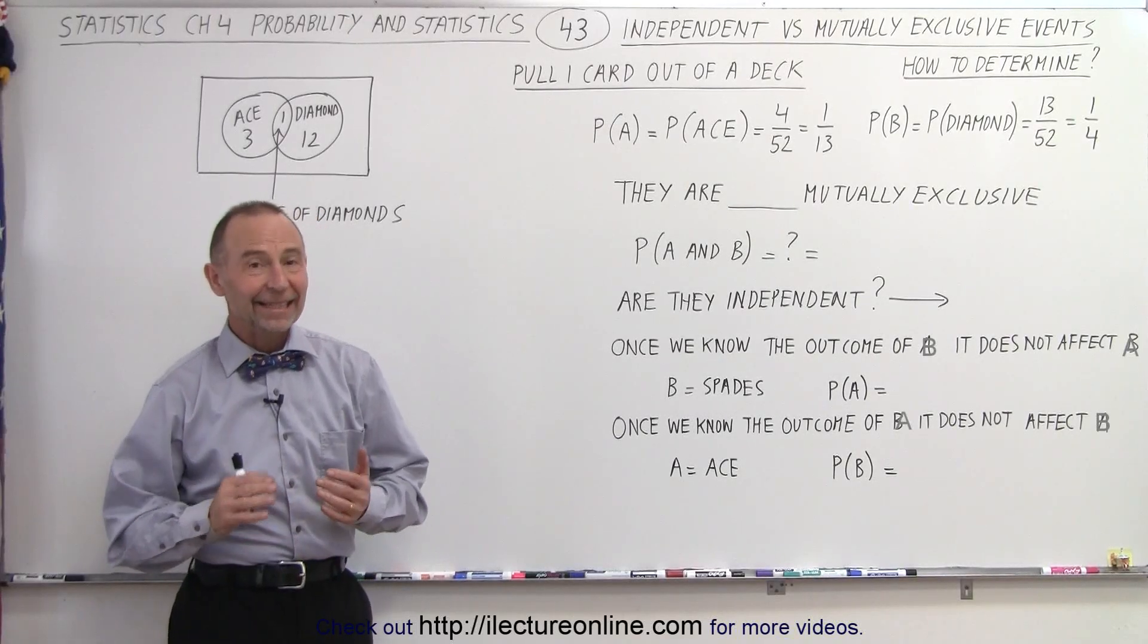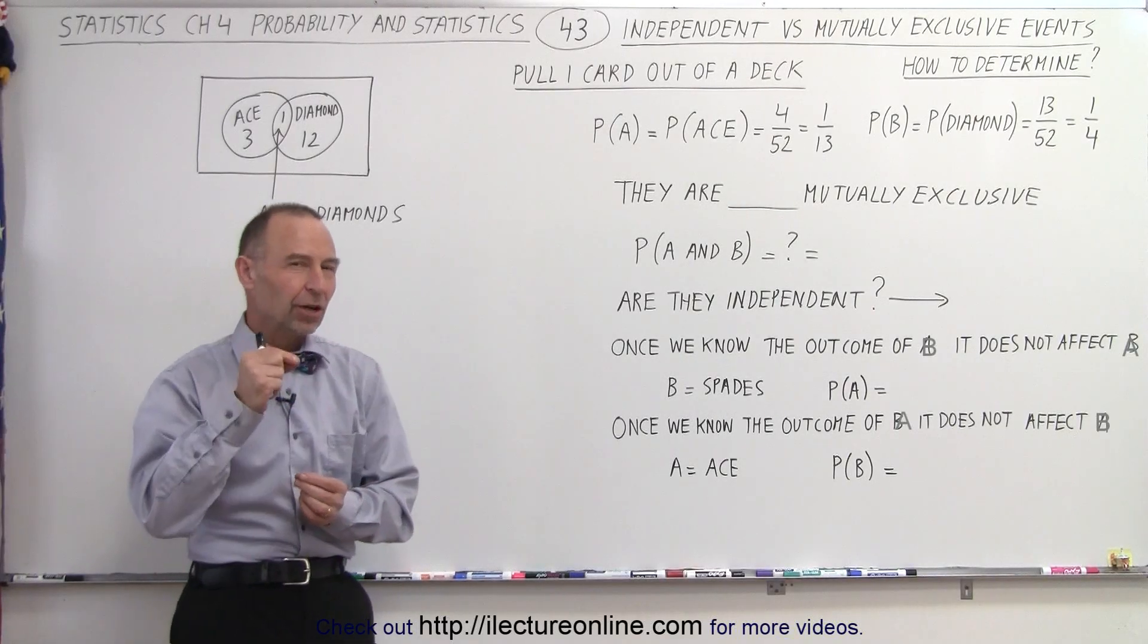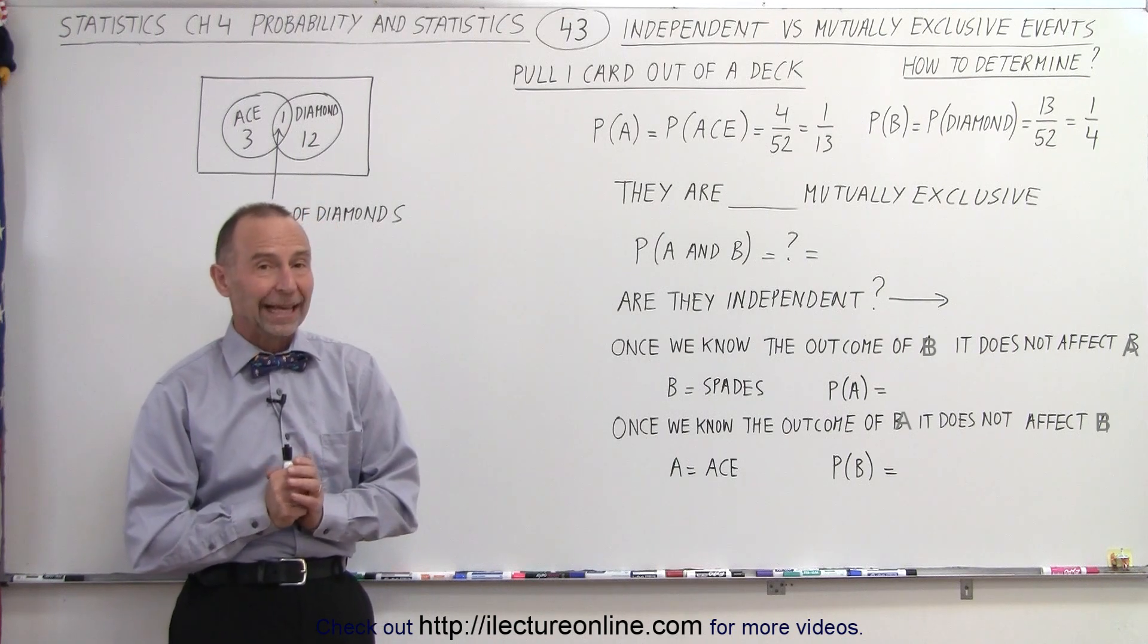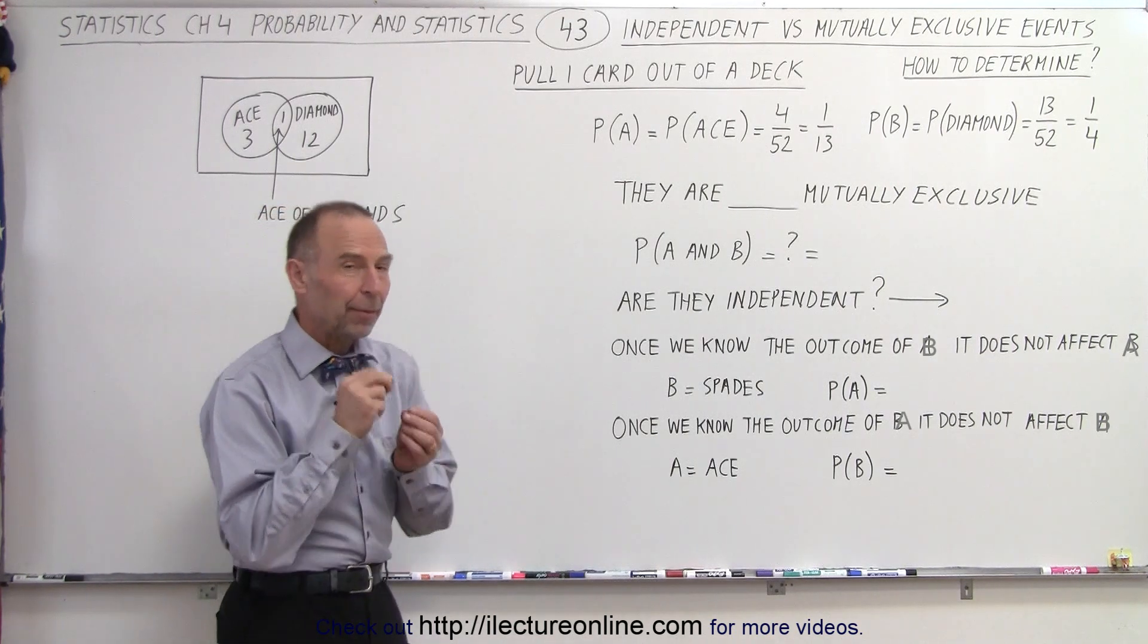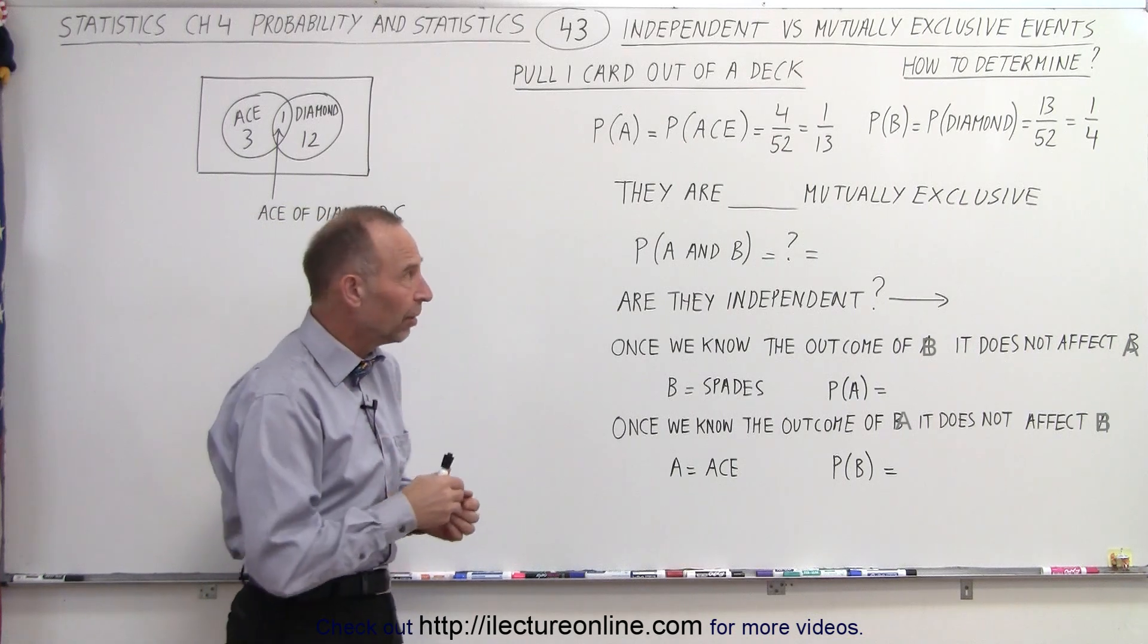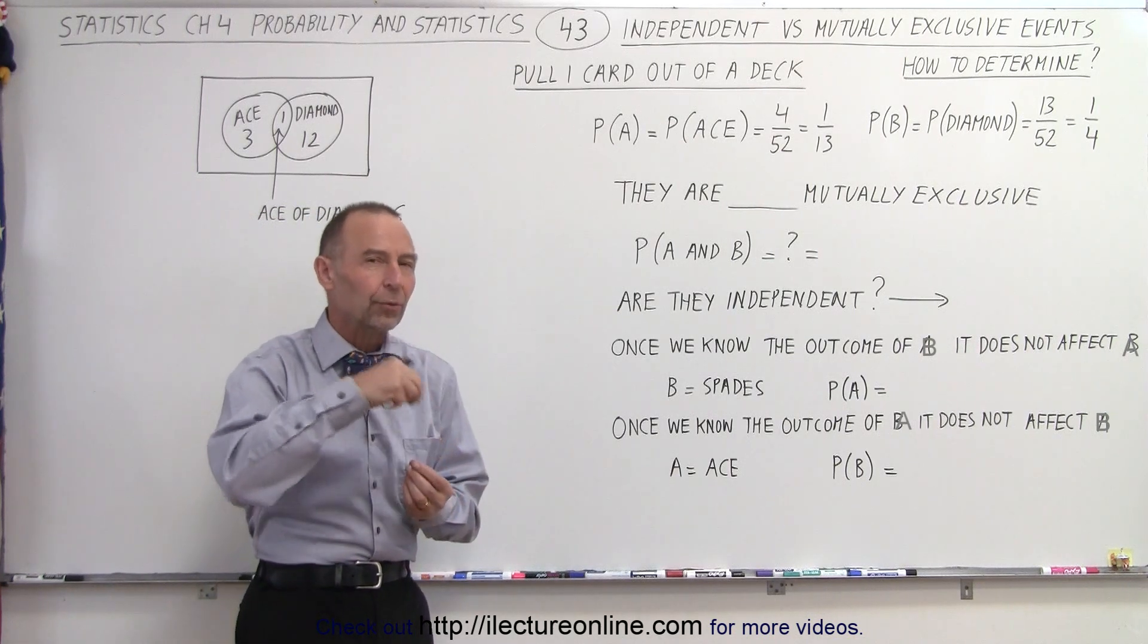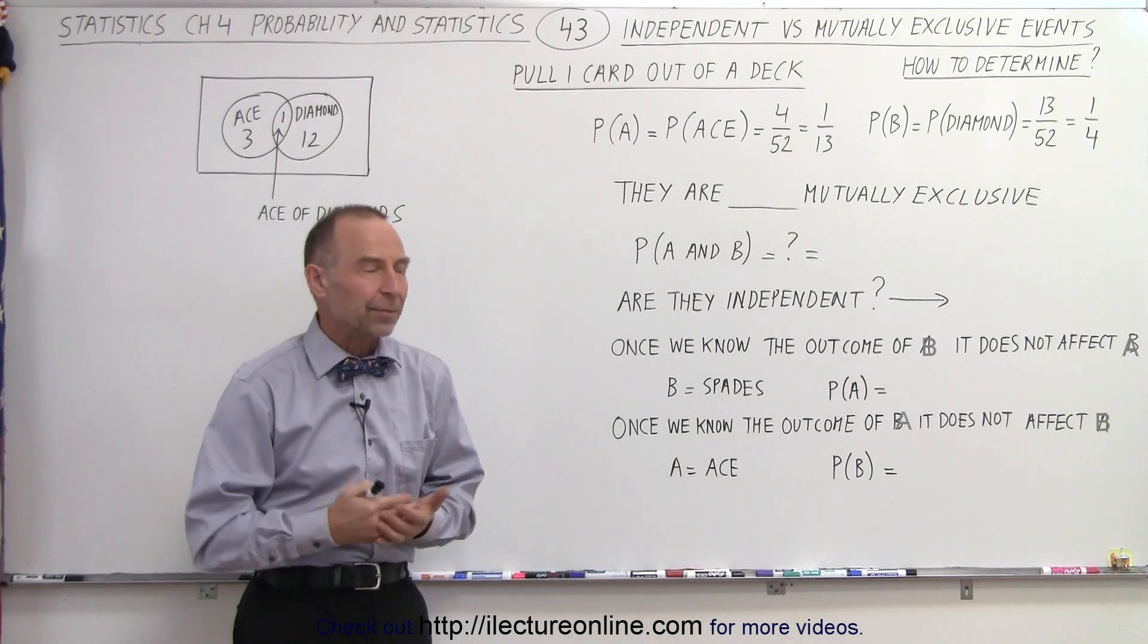Welcome to our lecture online. In this example, we're pulling a single card out of a deck of cards and we have two probabilities. Probability A is the probability that we'll pull out an ace. Probability B is the probability that the card we draw is a card of diamonds.